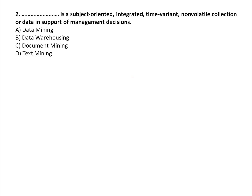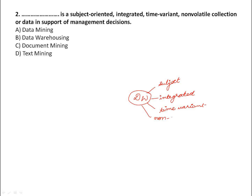The next question: a data warehouse is a subject-oriented, integrated, time-variant, non-volatile collection of data in support of management decisions. Subject-oriented means it is based on a broader subject. Integrated means it is made up of heterogeneous sources — data from different sources. Time-variant means it contains historical data. Non-volatile means when you add new data, you don't erase the previous data — you just summarize and add it. So the answer is data warehouse.